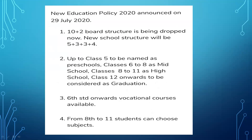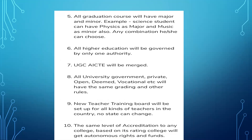From sixth standard onward, vocational courses will be available. From class eight to eleven, students can choose their subjects. All graduation courses will have a major and a minor — for example, a science student can have physics as a major and music as a minor, with many combinations available. All higher education will be governed by only one authority.